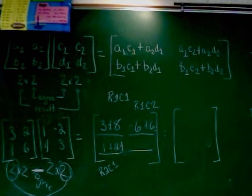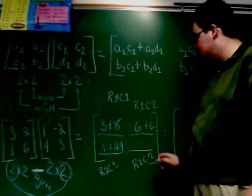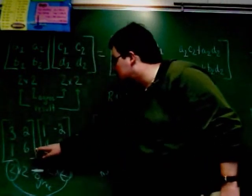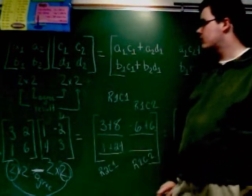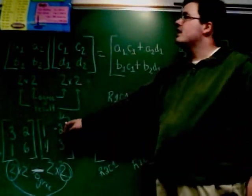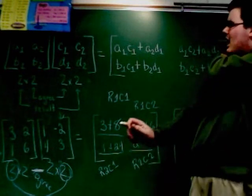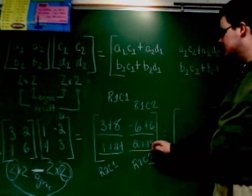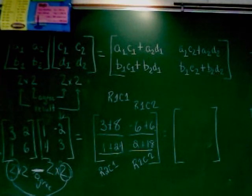And the last one here. This spot is row two, column two. So I'm going to multiply what's in row two with what's in column two. I've got one times negative two, which is negative two. And six times three, which is 18. Alright. So I'll see you guys now.